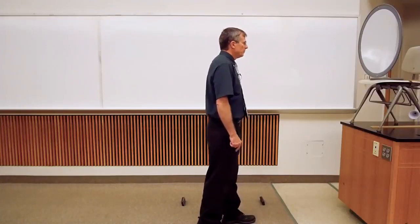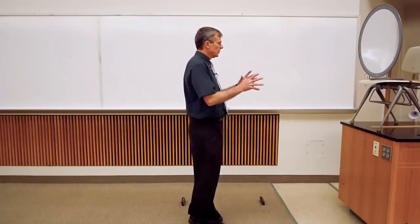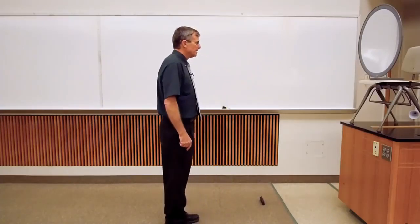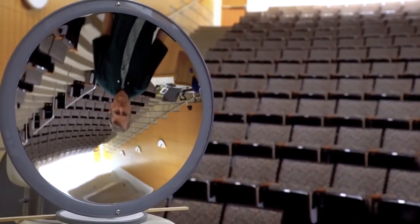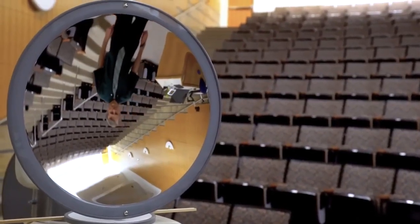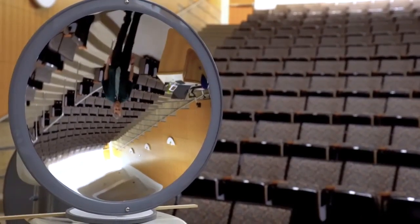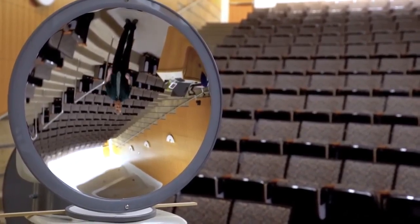And then as I move past the focal point toward the radius of curvature, the image is shrinking in size until at the radius of curvature, the image is now unmagnified. The magnification is 1. Beyond the radius of curvature, the magnification becomes less than 1, and the image is therefore reduced and still inverted.